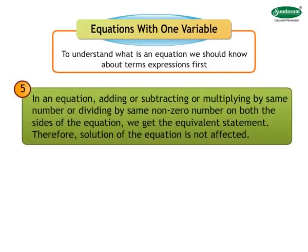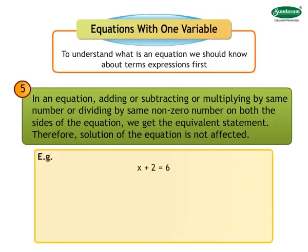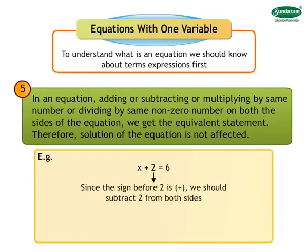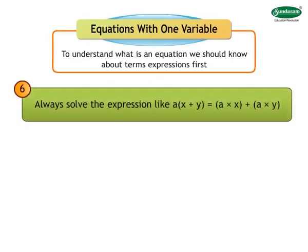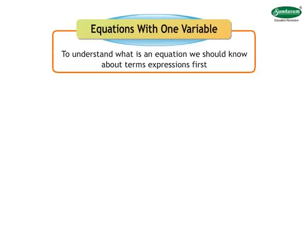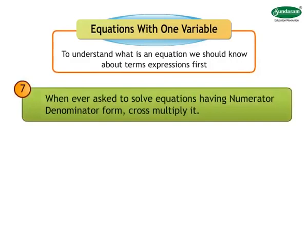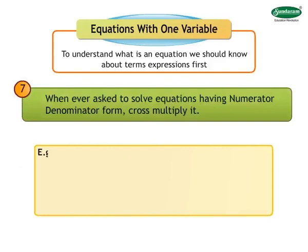Example: x plus 2 is equal to 6. Since the sign before 2 is plus, we should subtract 2 from both sides. That is, x plus 2 minus 2 is equal to 6 minus 2. Therefore, x plus 0 is equal to 4, so x is equal to 4. Always solve the expression like a into bracket x plus y as a into x plus a into y. Whenever asked to solve equations having numerator and denominator form, cross multiply it. Example: x plus 5 upon 2 is equal to 1 minus x upon 3, then x plus 5 multiplied by 3 is equal to 1 minus x multiplied by 2. Then solve further.